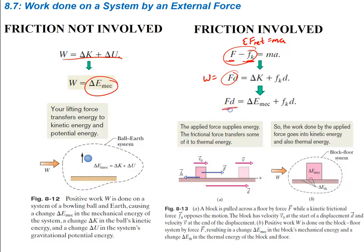The work done by the actual applied force goes into the change in kinetic energy — which is the change in mechanical energy as long as potential isn't changing — and then there's the force of kinetic friction over some distance. The applied force supplies energy, and the frictional force transfers some of it into thermal energy. So the work done by the applied force equals some change in kinetic energy plus some addition of thermal energy from the friction. We use delta E_TH to signify thermal energy.